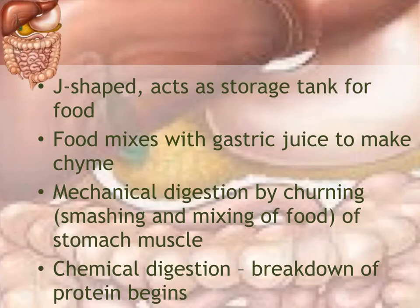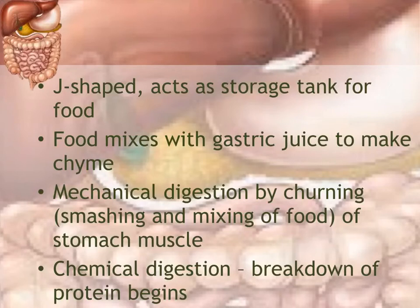Food mixes with gastric juices to form chyme, which is a watery food mixture. Gastric juices are made up of stomach acid and enzymes that help digestion. The mechanical digestion in the stomach is called churning — the muscles of the stomach twist and compress the food, mixing it with gastric juices. Chemical digestion occurs through enzymes that break down protein, and protein digestion begins in the stomach.